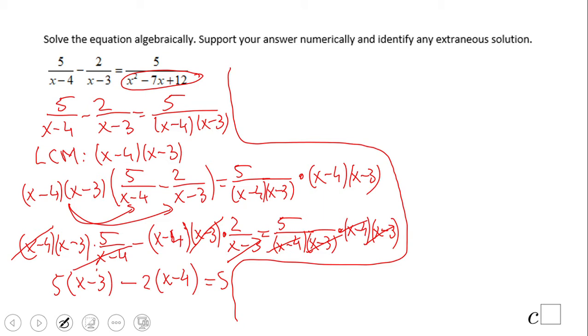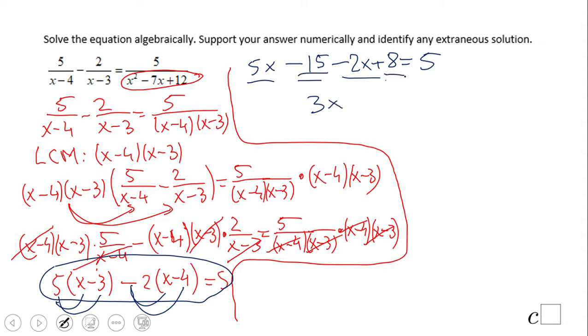If you notice, from that rational equation we have nothing else than something very nice. Using distributive property here, we have 5 times x is 5x, 5 times negative 3 is negative 15, minus 2x, and be careful here, this becomes plus 8 equals 5. These two guys are alike, so we have 3x. These two guys are alike, negative 15 plus 8 is negative 7 equals 5.